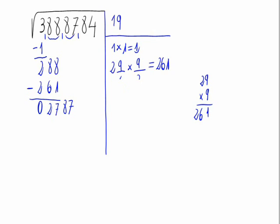Now, we do the double of 19, which is 19 times 2, which gives 38. So we write it here. Line times line equals. And now, we search for the number which will make this operation the closest possible to 2787 without going over it.